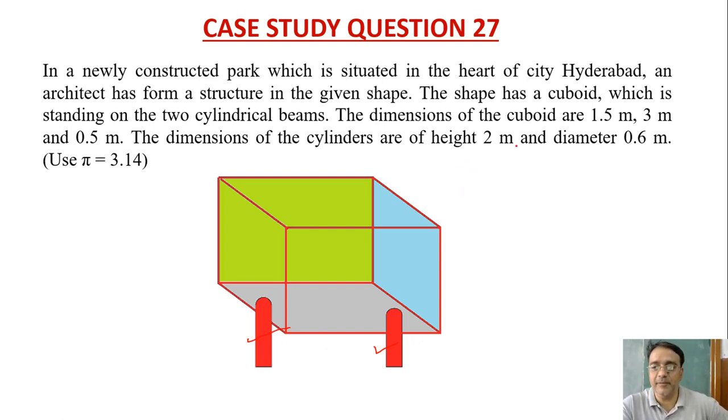The dimensions of the cuboid are 1.5 meter, 3 meter and 0.5 meter. The dimensions of the cylinders are of height 2 meter and diameter 0.6 meter. And for the given questions you have to use π equals 3.14.